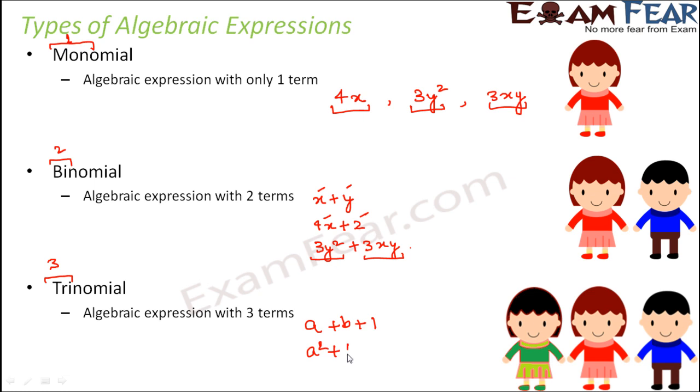Again, a squared plus b squared plus 3ab is a trinomial because it has three terms: a squared, b squared, and 3ab. x squared minus 2 plus 3y is also a trinomial because it has three terms: x squared, minus 2, and 3y.